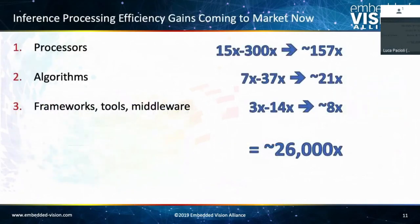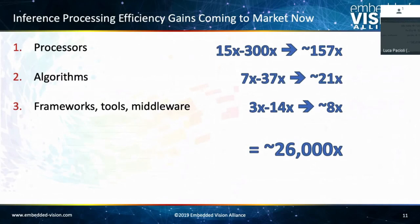These improvements compound. If I have a 2x more efficient algorithm on a 2x more efficient processor with a 2x more efficient compiler, I should see an 8x overall improvement in efficiency. When you multiply these numbers together across all the improvements we're seeing, you get something like 26,000 times — which seems completely insane, but appears to be real. When we get a 26,000 times improvement in anything, that's pretty amazing.